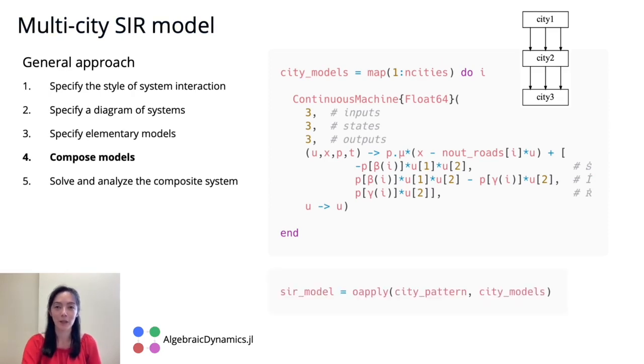We've now specified how we want to compose systems and the specific models that we want to compose. So now we're ready to build the complete multi-city SIR model. To do this, we call the oapply method, which applies the elementary models, in this case, city models, to the diagram of systems, in this case, city pattern. The result is the complete multi-city SIR model.